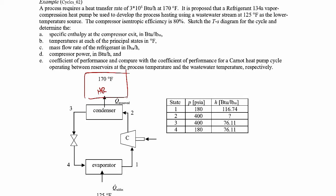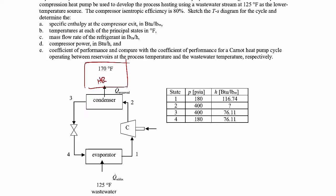It's proposed that a refrigerant 134A vapor compression heat pump be used to develop the process heating using a wastewater stream at 125 degrees Fahrenheit as the low temperature source — that's the cold reservoir. We're told that compressor isentropic efficiency is 80 percent.